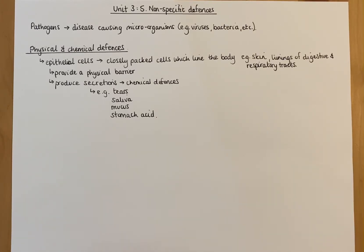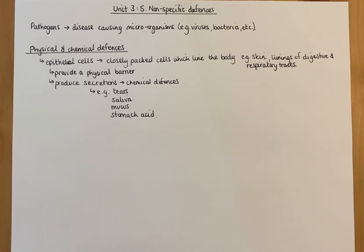This video is going to cover the first part of the immunology section of Unit 3 of Higher Human Biology, specifically the non-specific defenses. There's only going to be one video on this and it's mainly going to focus on one particular type of white blood cell and its response to infection. We'll talk more about that cell in the next set of videos.